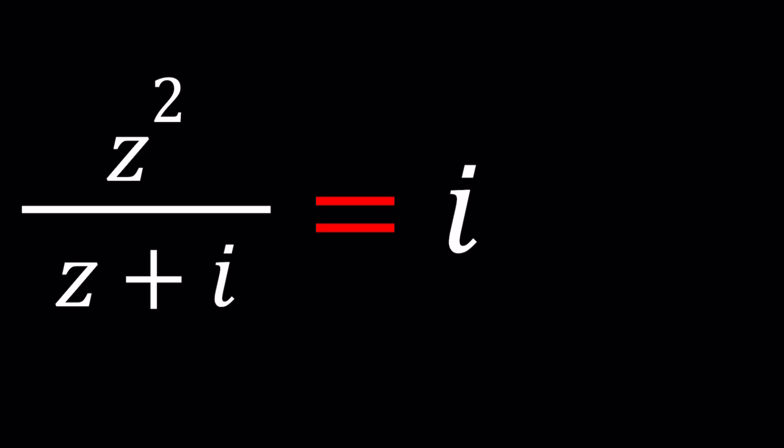We have this ratio or fraction, whatever you want to call it, z squared divided by z plus i. So I can't really think of a second method for this problem. I don't know if it does exist. Please let us know. But I'm just going to cross multiply.